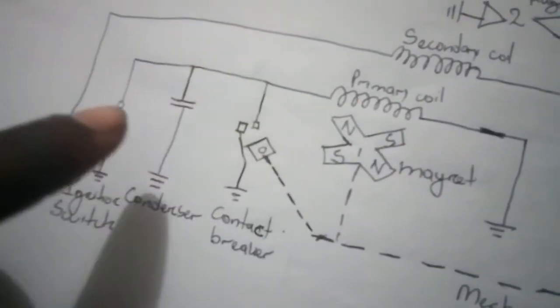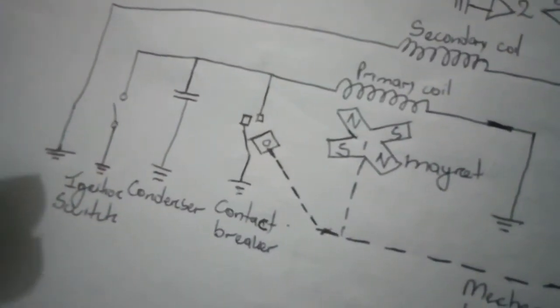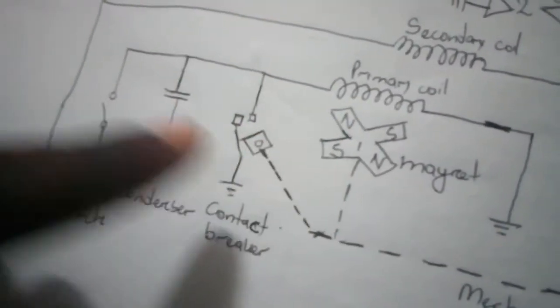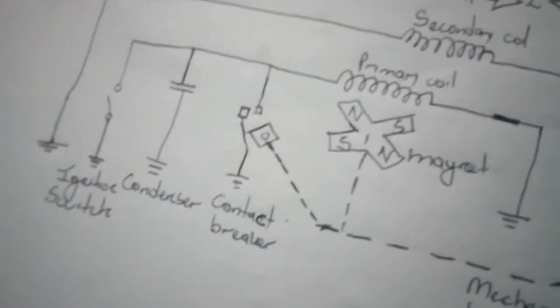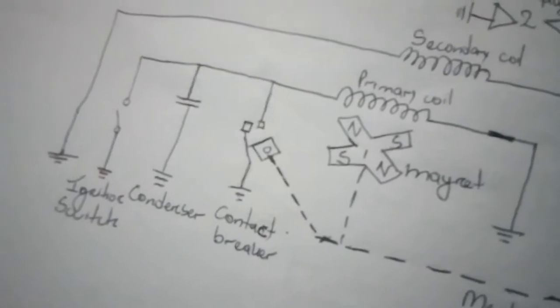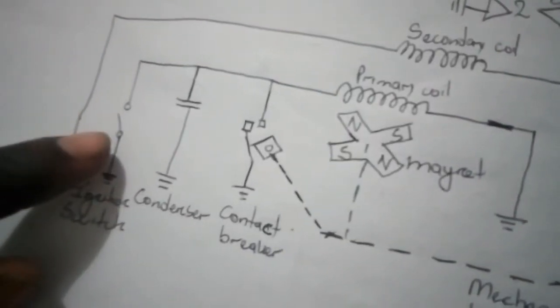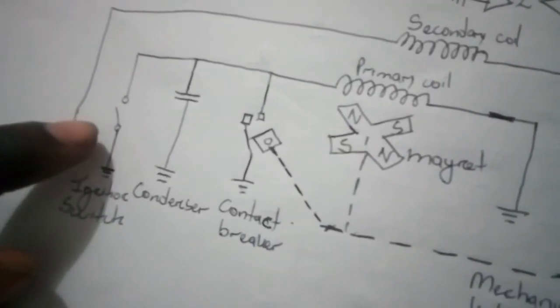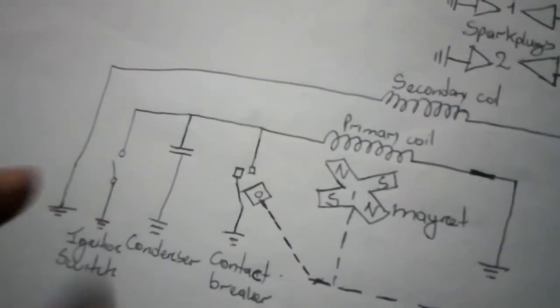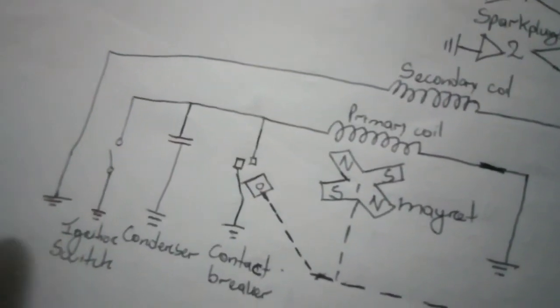This allows us to shut down the magneto and of course to open it so that the contact breaker acts as the only switch and the magneto functions. So in the off position, this ignition switch is off. The magneto is said to be live when the ignition switch is in the on position.